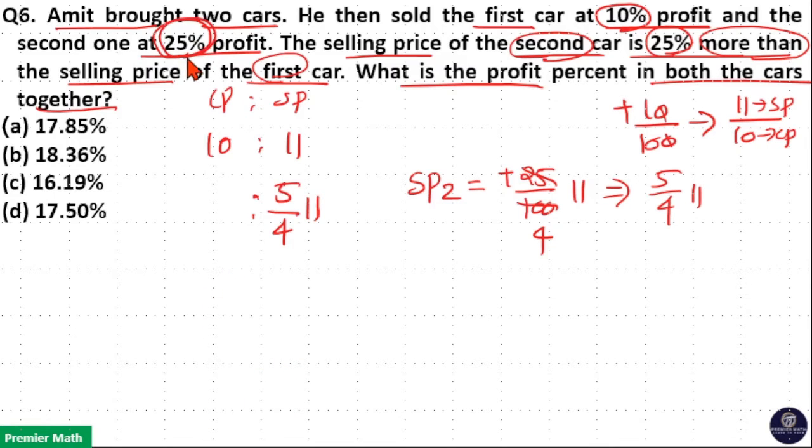Amit sold the second car at 25 percentage profit. 25 percentage profit means sell price is 25 percentage greater than the cost price. Here also difference is 25 percentage. That means here this will become 11.